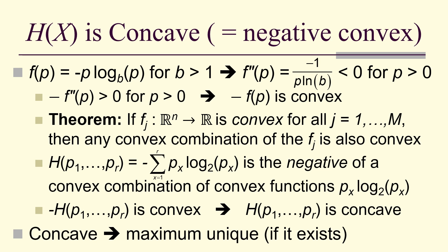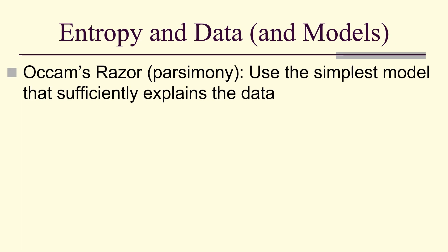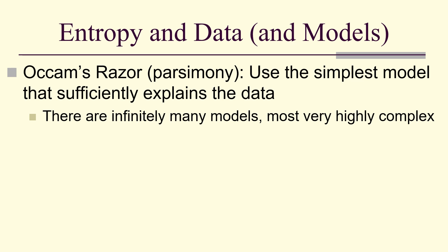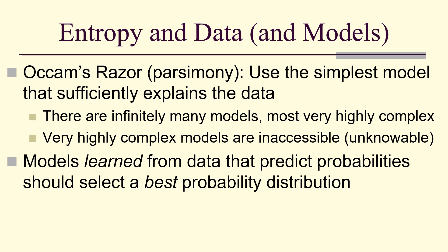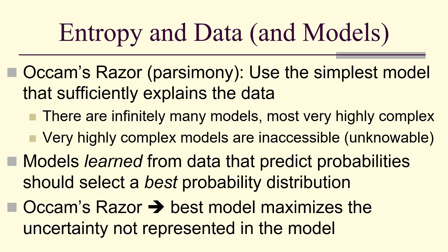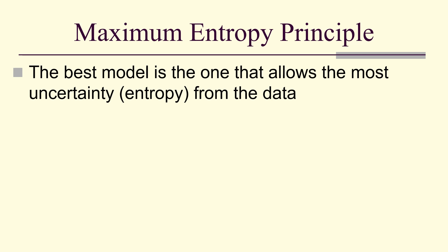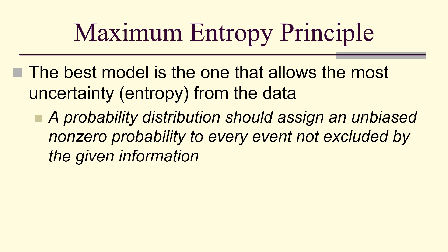Occam's razor says: use the simplest model that sufficiently explains the data. There are infinitely many models; most are highly complex and inaccessible — unknowable. Models learned from data that predict probabilities should select a best probability distribution. Occam's razor says the best model maximizes the uncertainty not represented in the model. That gives us the maximum entropy principle: the best model is the one that allows the most uncertainty from the data. A probability distribution should assign an unbiased, non-zero probability to every event not excluded by the given information.